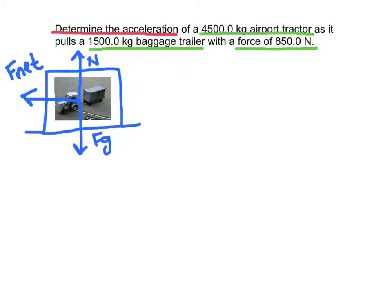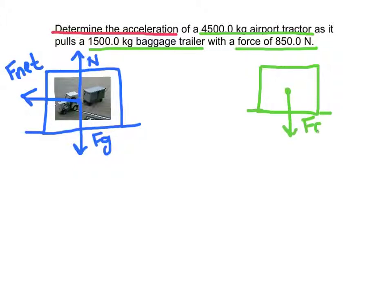Now I am going to draw another free body diagram, because the force given in the problem — 850 newtons — is the force actually acting on the trailer; it is the force that the tractor is pulling the trailer with. I will draw this box in a different color to represent the trailer alone. It still has the force of gravity downward and the normal force — equal and opposite — and then the force of the tractor pulling the trailer, which I will call F sub T. This represents tension; any time objects are connected by a hitch, rope, or chain, that force can be called tension.